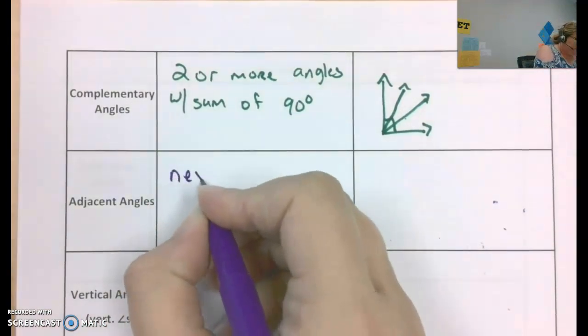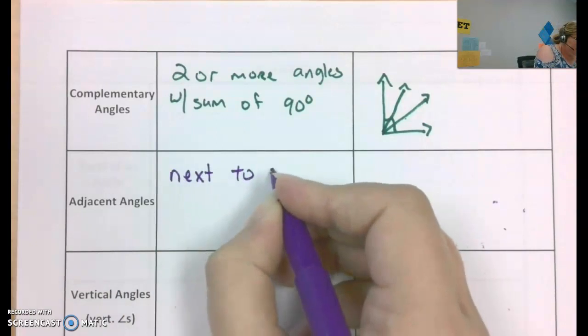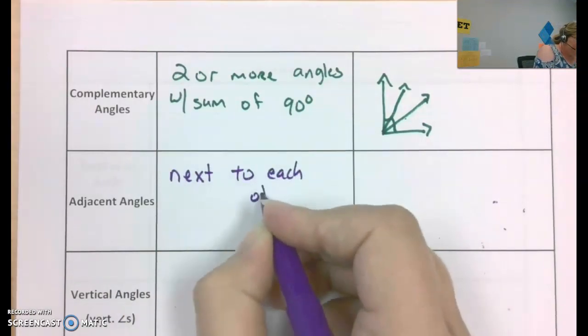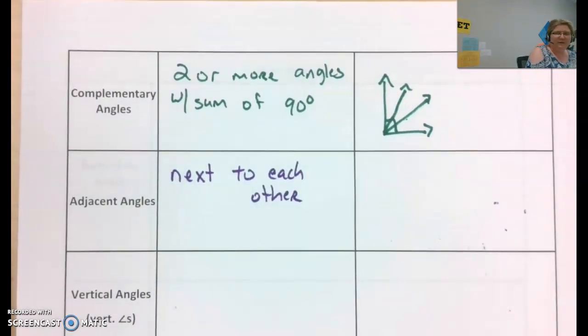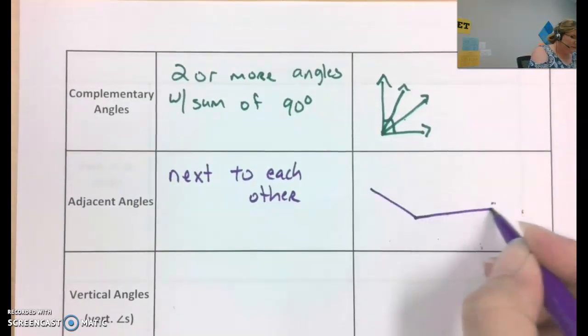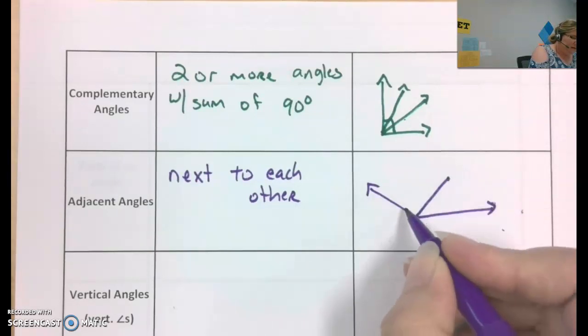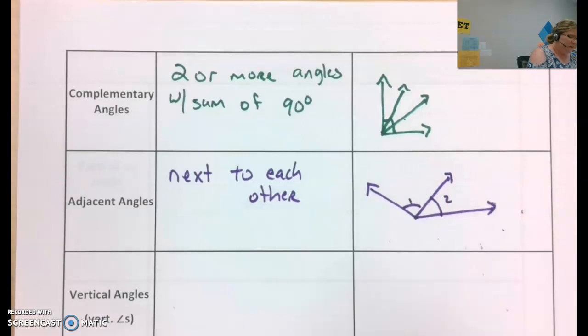Adjacent angles, that simply means that they are next to each other. It doesn't really say anything about the sum of their measures. It's just, for example, here's an obtuse angle, and now you have this angle one, and angle two are beside of each other.